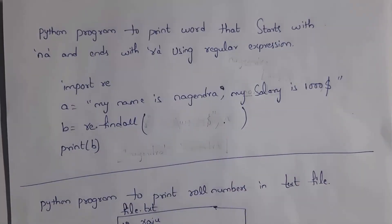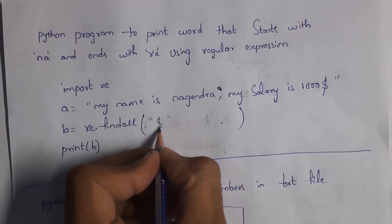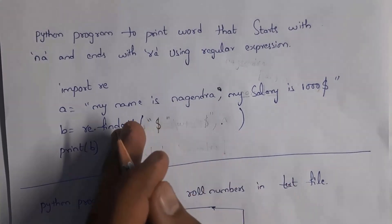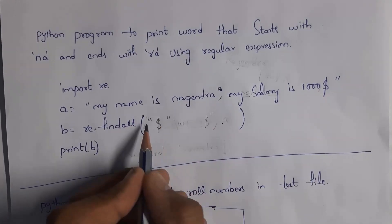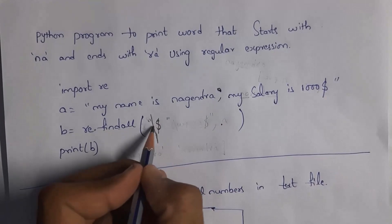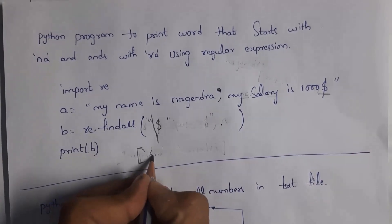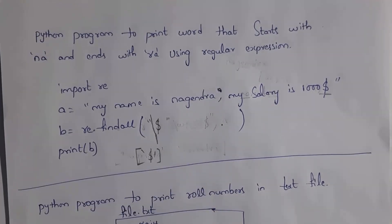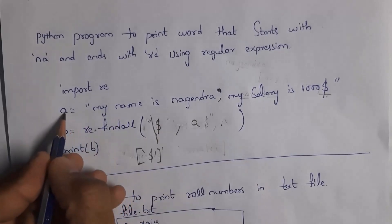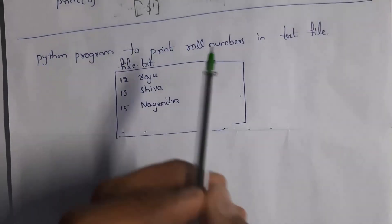This is another example: find whether the dollar sign is present in given text. The dollar sign appears at the last of the text. Don't write just $ because it is a meta character used to find end-of-string. Instead, use \$ — the backslash escapes the meta character so it searches for a literal dollar sign. The string is in variable a. The findall function returns the result as a list, so you'll get ['$'] as output. For any special symbol, use backslash before it.